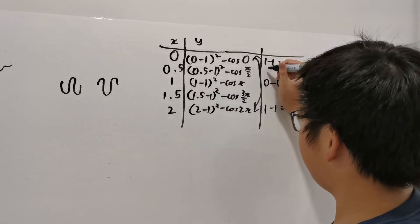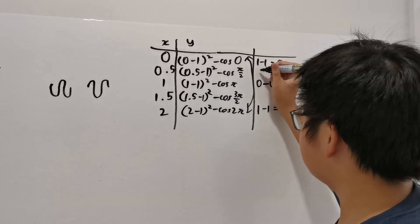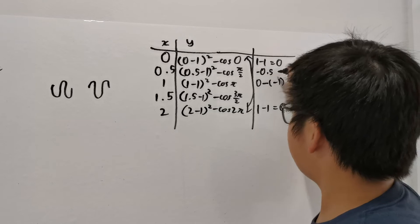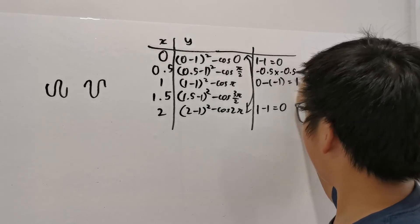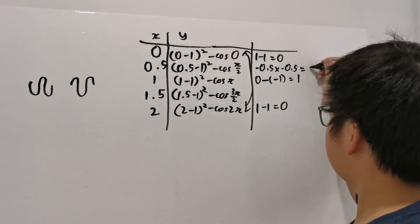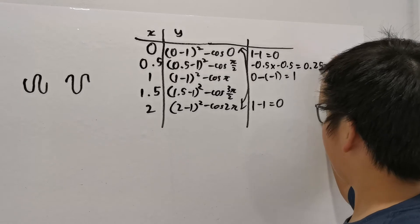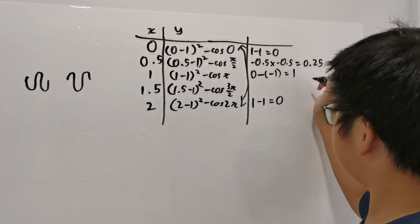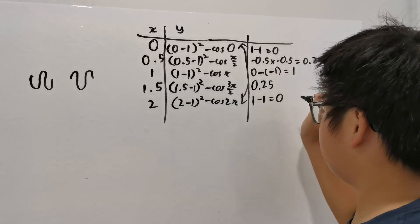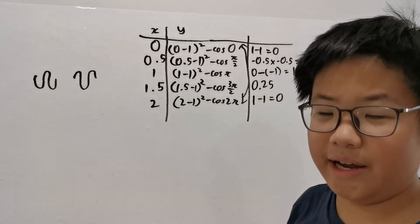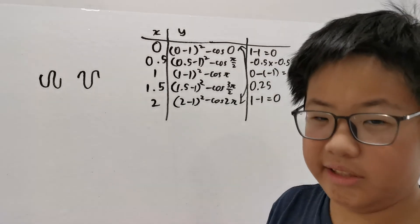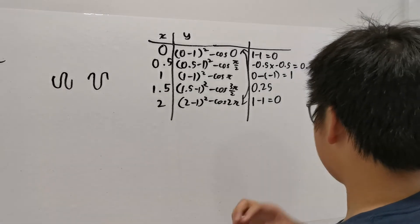Now here, this becomes minus 0.5 times minus 0.5 equals to 0.25. And here, it's also 0.25 because I could change both sides of the 0.5. Both sides, actually. Then you see no change in the result.